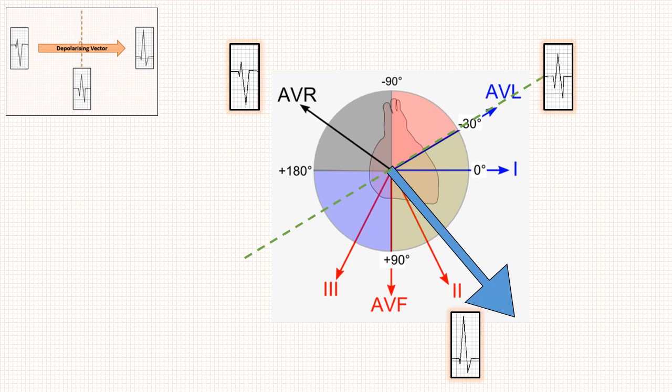After understanding this concept, let's move to the actual method of determining cardiac axis. The first method is lengthy but accurate. It contains three steps.